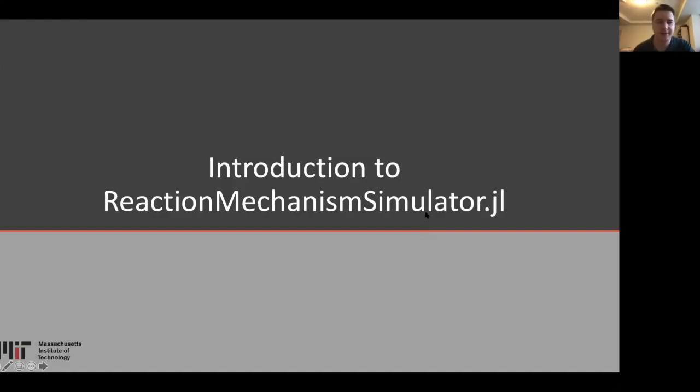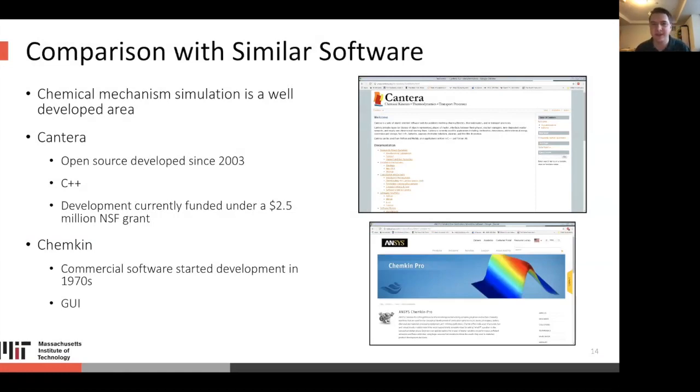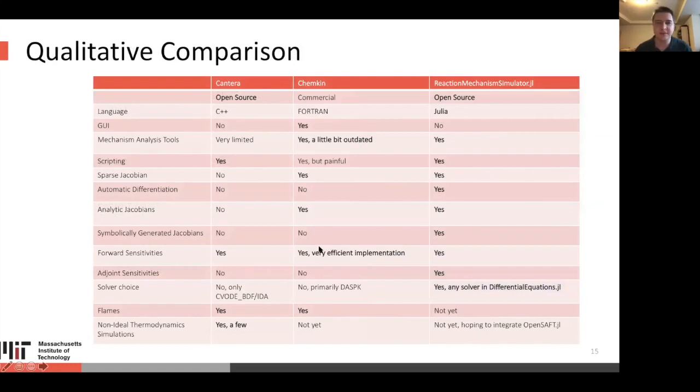So now you've had a little bit of an introduction. Now we'll talk about other similar software and how RMS compares. Chemical mechanism simulation is a very well-developed area. The original software, Chemkin, was developed in the 1970s. Cantera, the most prominent open-source software in this area, has been developed since 2003. Cantera is a C++ code. It's very well-funded. It has currently under a $2.5 million NSF grant. Chemkin is a commercial software that has a GUI. It has a lot of users. It's widely used in the Kinetics community and very well-funded.